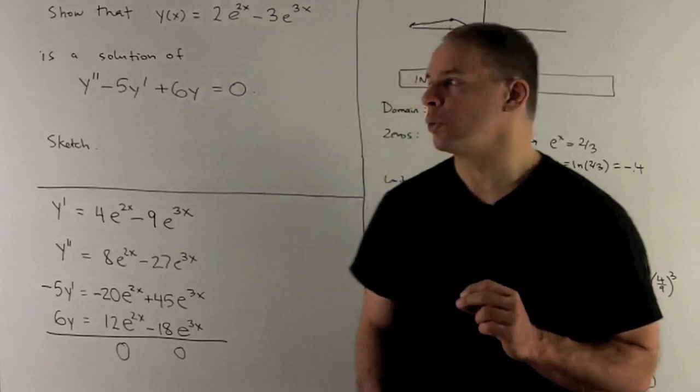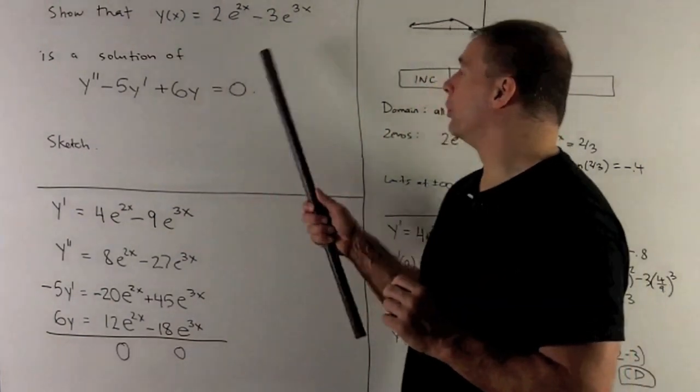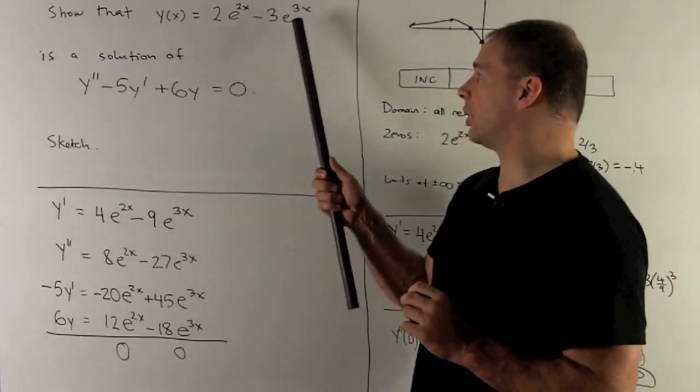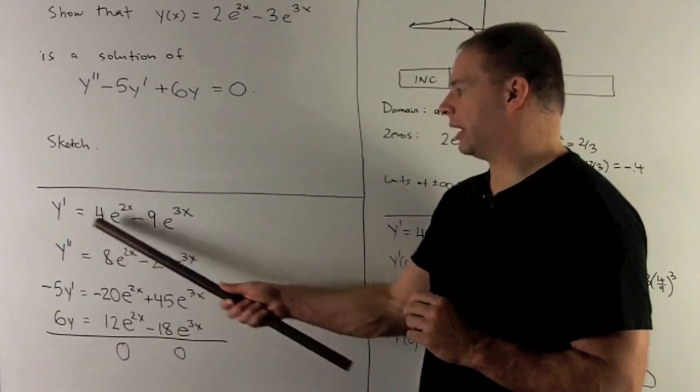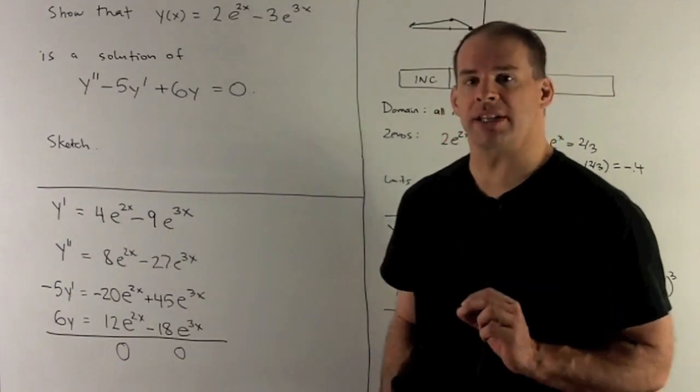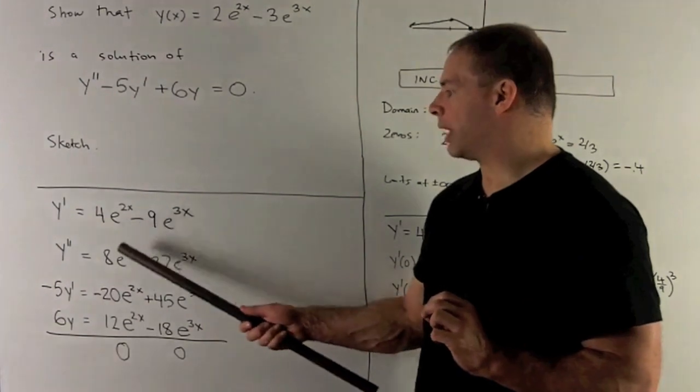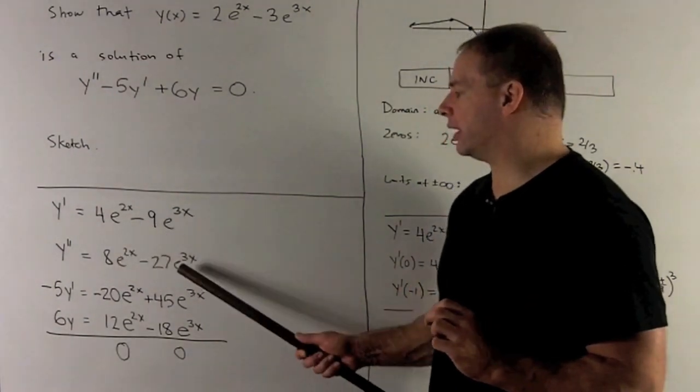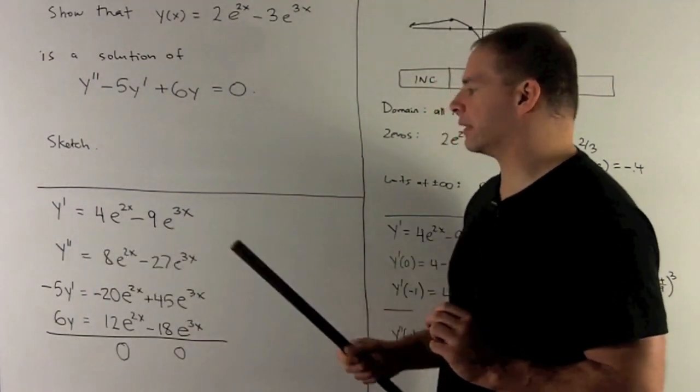So as I go through y, what am I going to do? Well here I multiply by 2, here I multiply by 3, giving me our first derivative. And then the same trick to get the second derivative. We multiply by 2 here, multiply by 3 here, I have my second derivative.